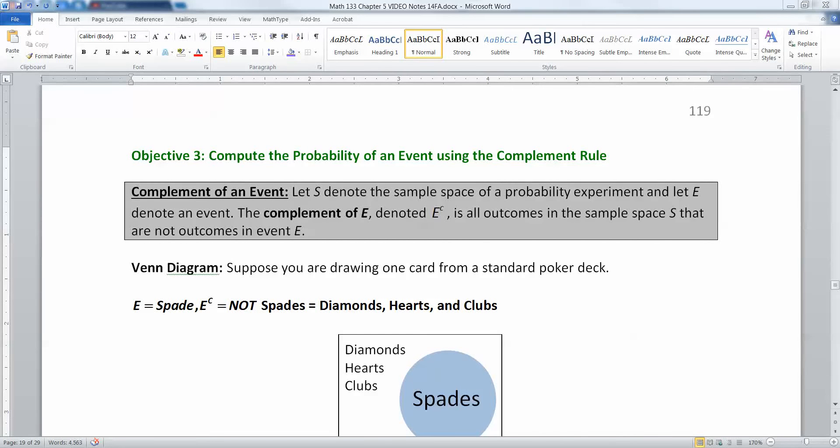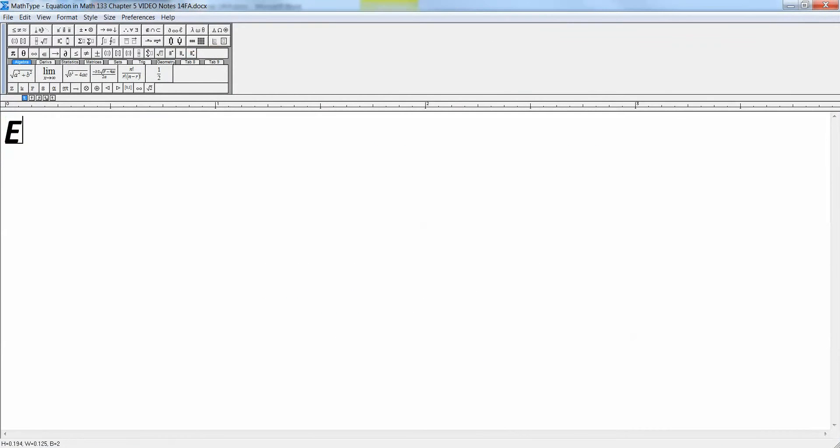In this last section of 5.2, we want to discuss the complement of an event and the complement rule. So the complement of an event, if we suppose that S is the sample space of the probability experiment and E is an event, then the complement of an event denoted E complement or E bar, or E prime, or it's E with a little bar on its head.